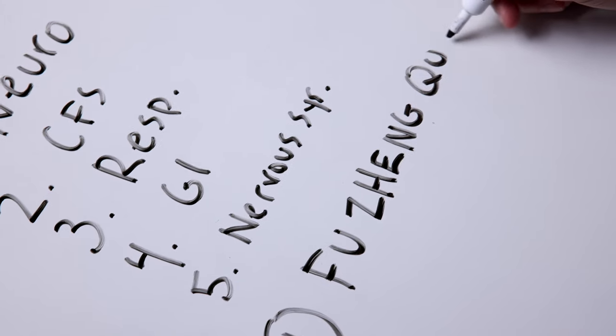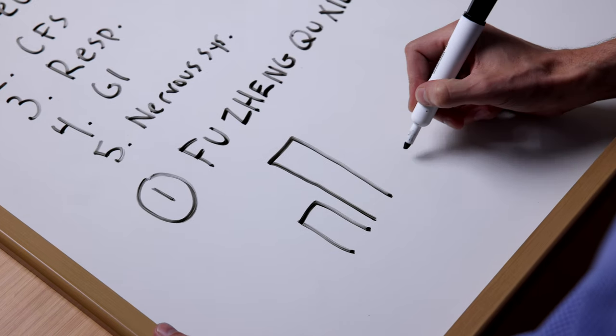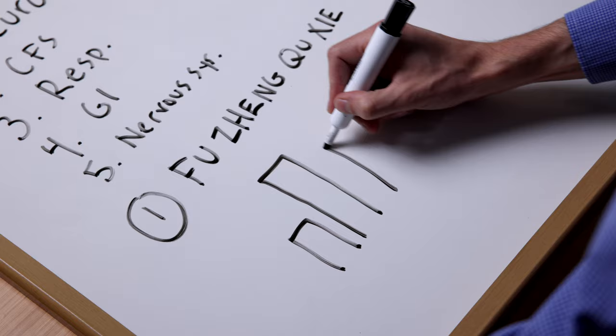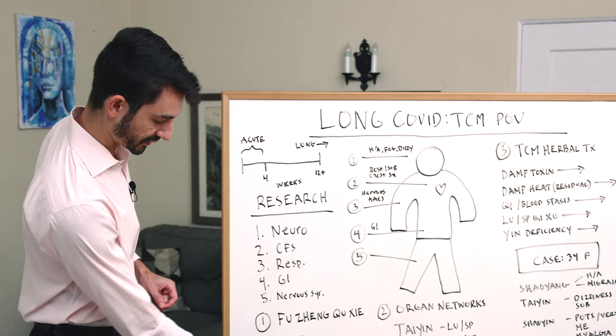Within TCM there's a saying fuzhong qixie, and this expression means tonify or strengthen your resources and remove what is pathogenic.